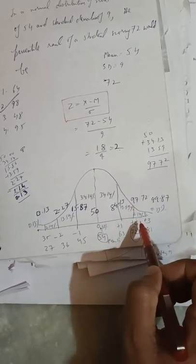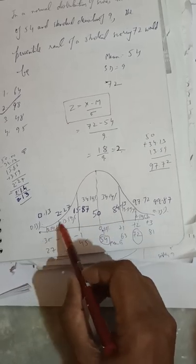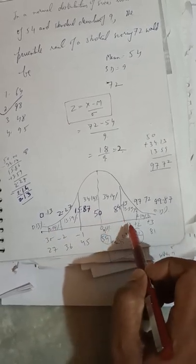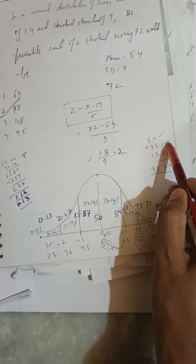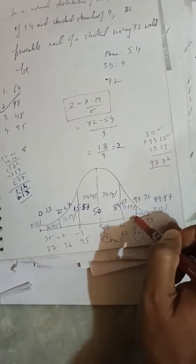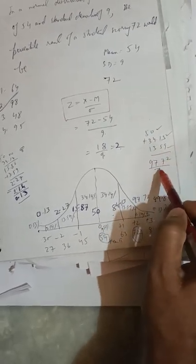So the value up to here is 50 + 34.13 + 13.59 = 97.72, approximately 98. So the correct answer is option B.